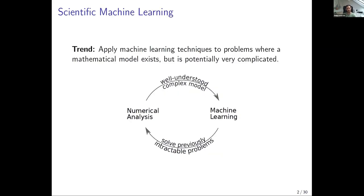The trend that this work falls into is what some people call scientific machine learning — where you solve classical problems in numerical analysis using machine learning. There are two goals you can have when doing this, and I think it's helpful to keep them in mind when interpreting the works out there. On one hand, you could try to solve a problem you couldn't do before by using machine learning instead of a model-based approach, and in many cases this actually improves things tremendously.